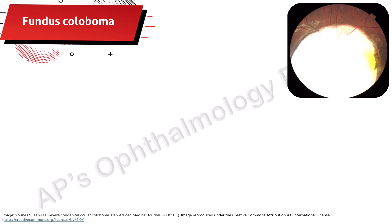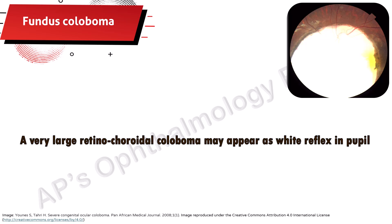Coloboma means absence of tissue. A very large retinochoroidal coloboma may appear as a white reflex in the pupil. No treatment is available.